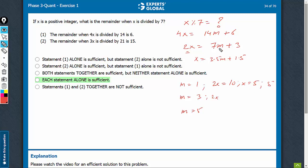For 3, 2x would be 21 plus 3, 24. x would be 12. 12 with 7, the remainder you see, again, is 5.